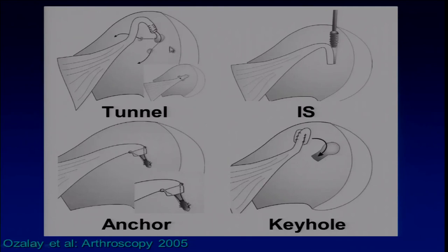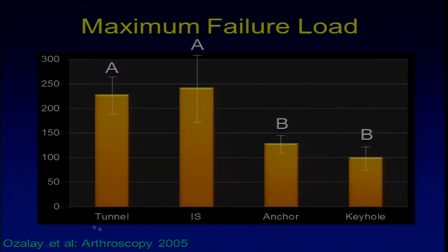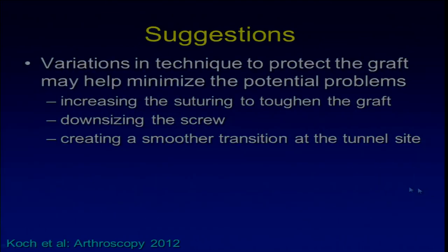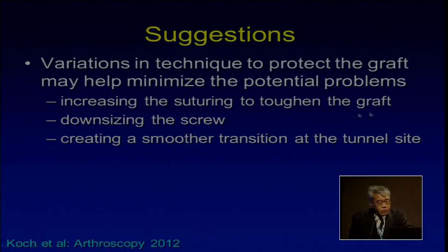For fixation in the bicipital groove, there are many methods: tunnel, interference screw, suture anchor, and keyhole. Ozale compared these four techniques and found the tunnel technique and interference screw are best for failure load. However, recent reports show that with interference screws, failure occurs early at the junction of the tendon and screw. Recommendations include variations in technique such as increasing graft strength, downsizing the screw, or creating a smoother transition at the tunnel site.